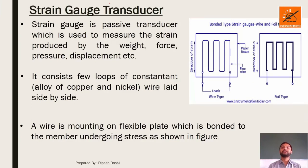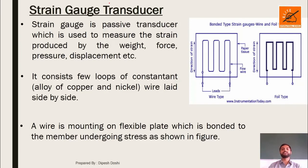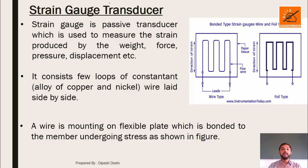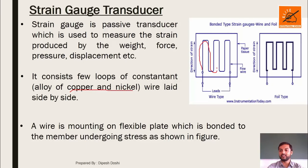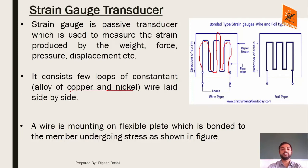The next topic is strain gauge transducers. In industry, when you want to measure how much an elastic material can be stretched or how much strain it can bear, you use a strain gauge transducer to measure stress, strain, weight, force, pressure, or displacement. The strain gauge is made of constantan, which is an alloy of copper and nickel. The wire is laid side by side in a design to form the strain gauge.